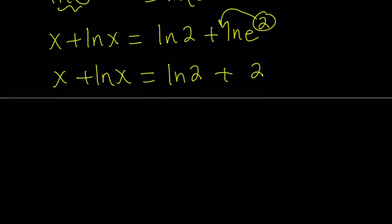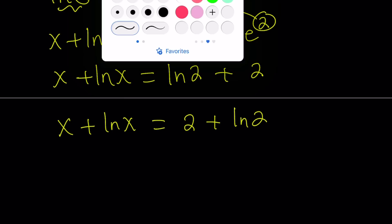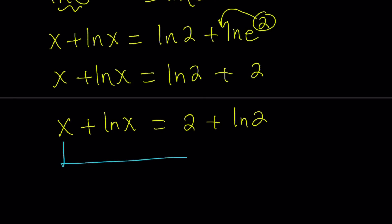So we can write this as x plus ln x equals 2 plus ln 2. Now, if you compare these two expressions, you'll quickly notice that if x equals 2, then this equation will work, because we have an x here and a 2 here — they correspond nicely.